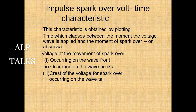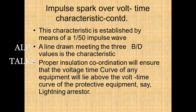The impulse spark overvoltage-time characteristic is obtained by plotting the time elapsed between the moment the voltage wave is applied and the moment of sparkover — including sparkover on the wave front, at the wave crest, and on the wave tail. This characteristic is established by means of a 1/50 impulse wave. Proper insulation coordination ensures that the voltage-time curve of any equipment lies above the voltage-time curve of the protective equipment, i.e., the lightning arrester.